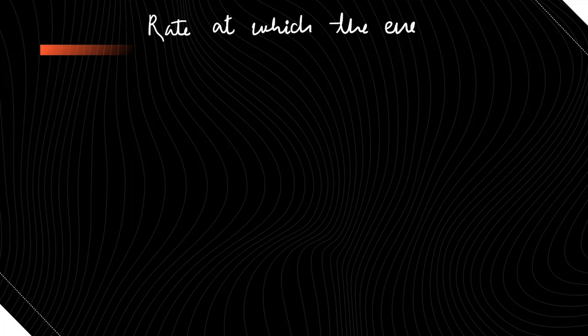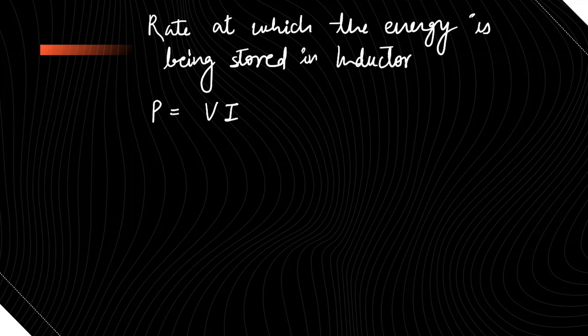The power or energy stored in inductor, we know the power is given by VI, voltage across inductor into the current flowing through it. So the voltage across the inductor can be written as L di by dt.